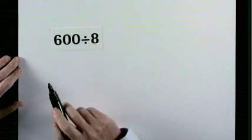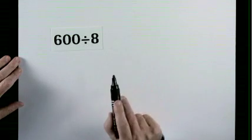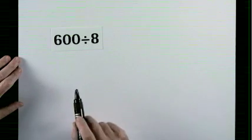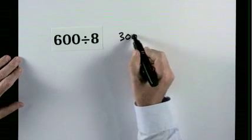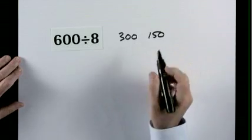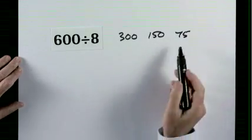600 divided by 8. Why not divide by 2, divide by 2, and then divide by 2? It's the same as dividing by 8. So half of 600 is 300. Half of 300 is 150, and half of 150 is 75. 75.